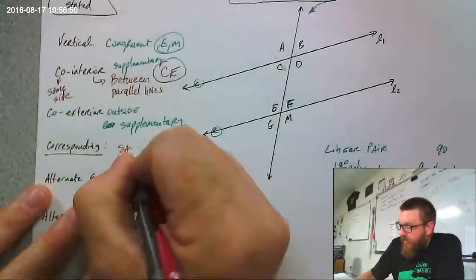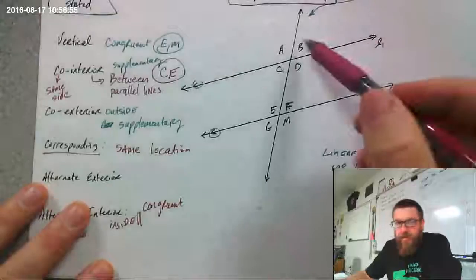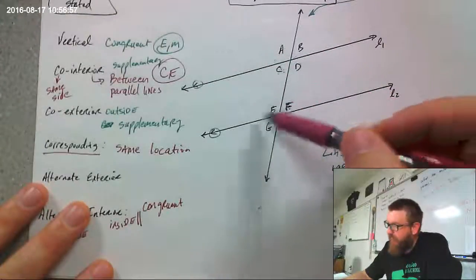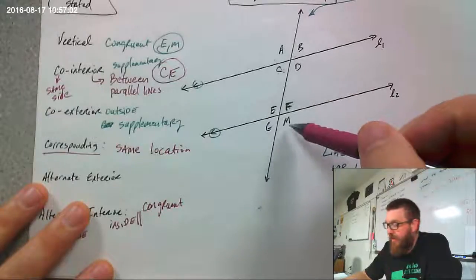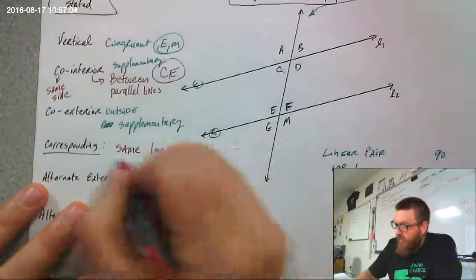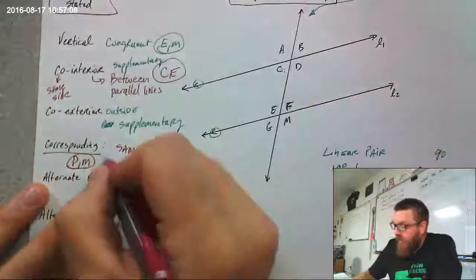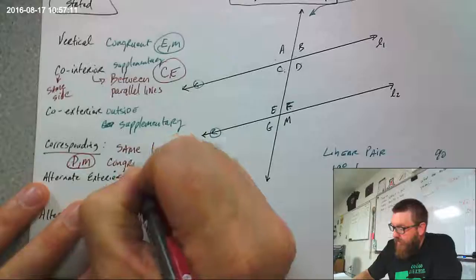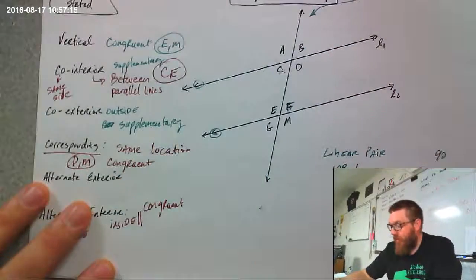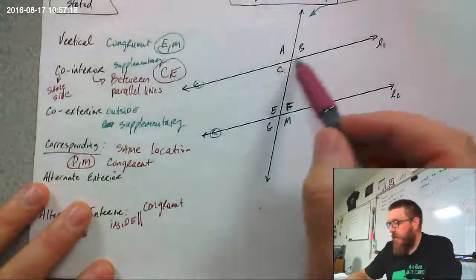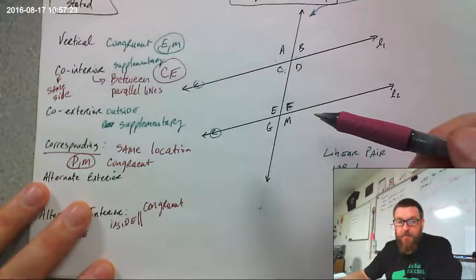Corresponding means it's in a relatively same location. I've got a cluster on the top and a cluster on the bottom. The bottom-right angle up here is D, and the bottom-right angle down here is M. So D and M are a pair of corresponding angles, and corresponding angles are always congruent.